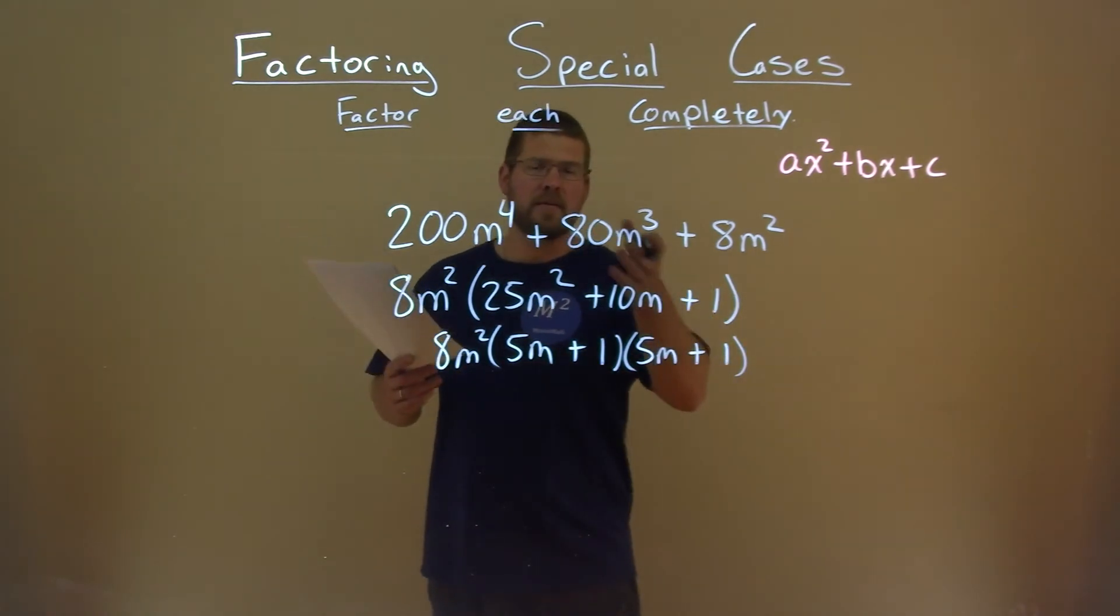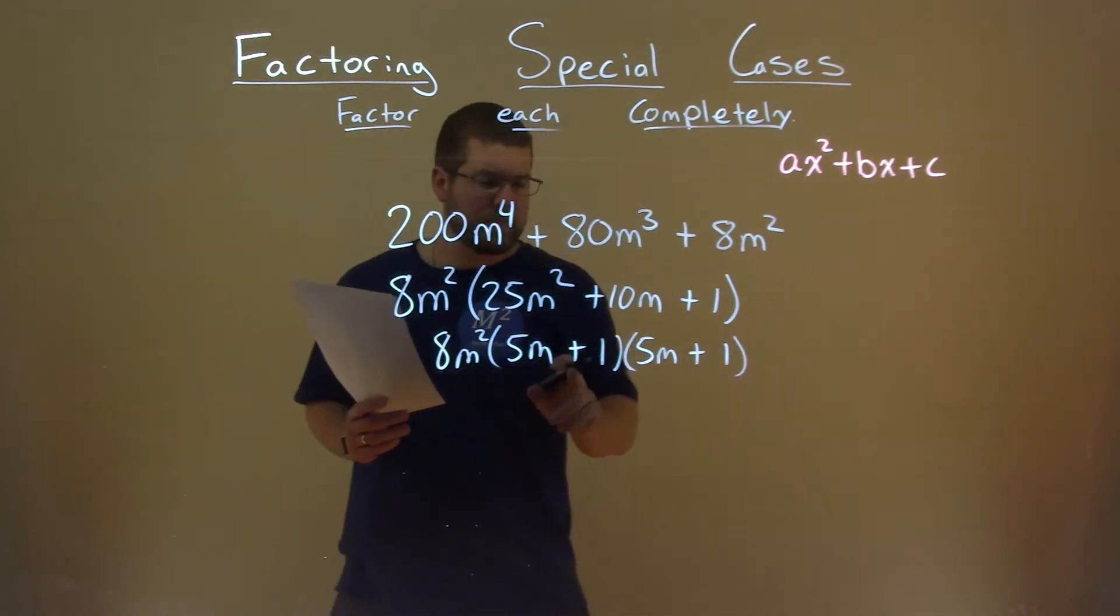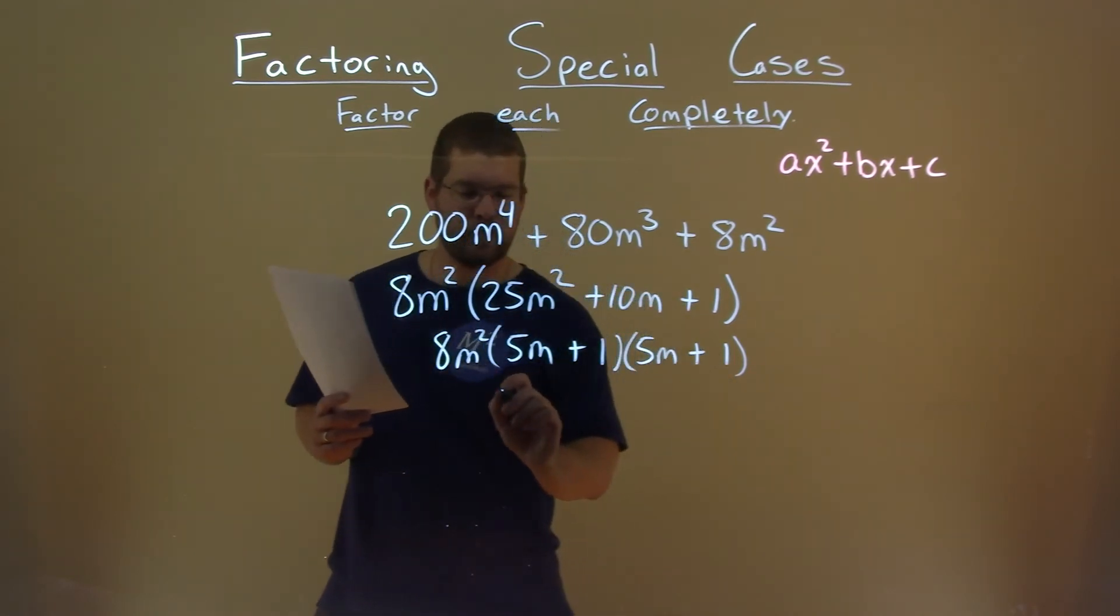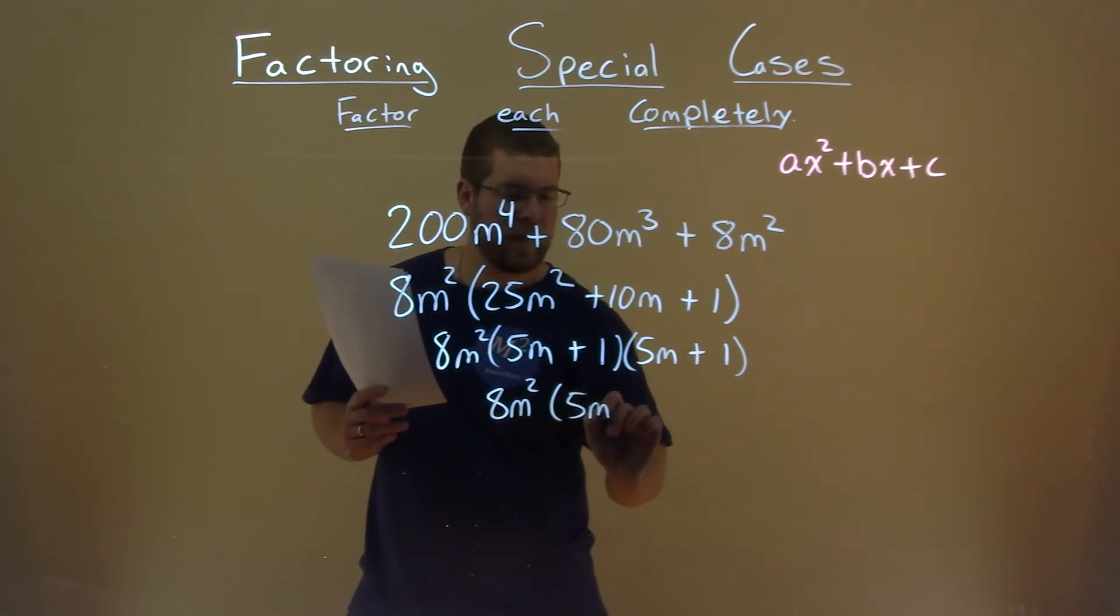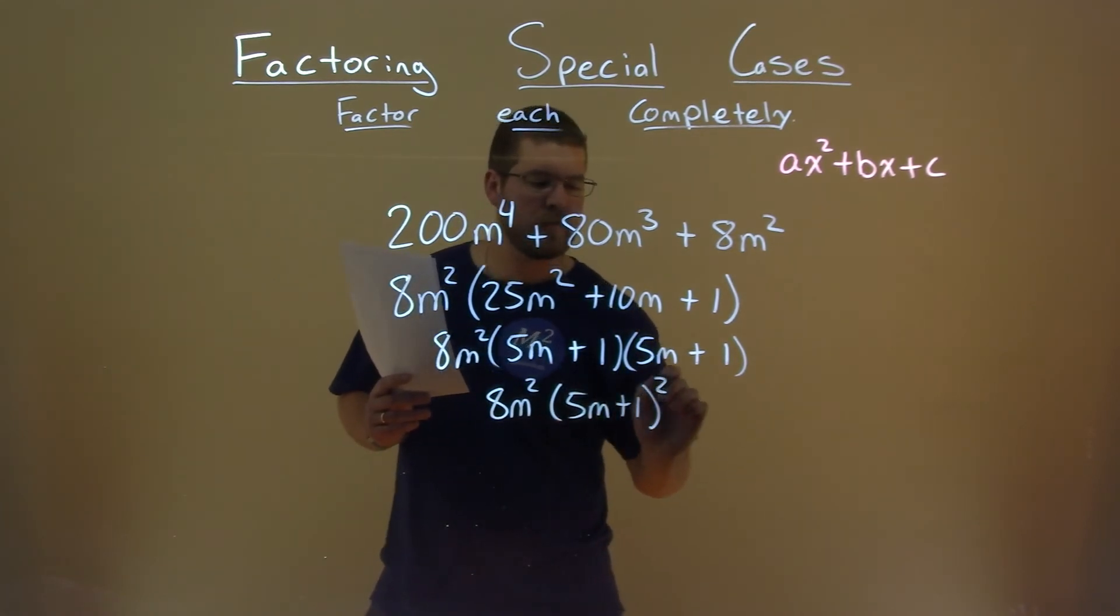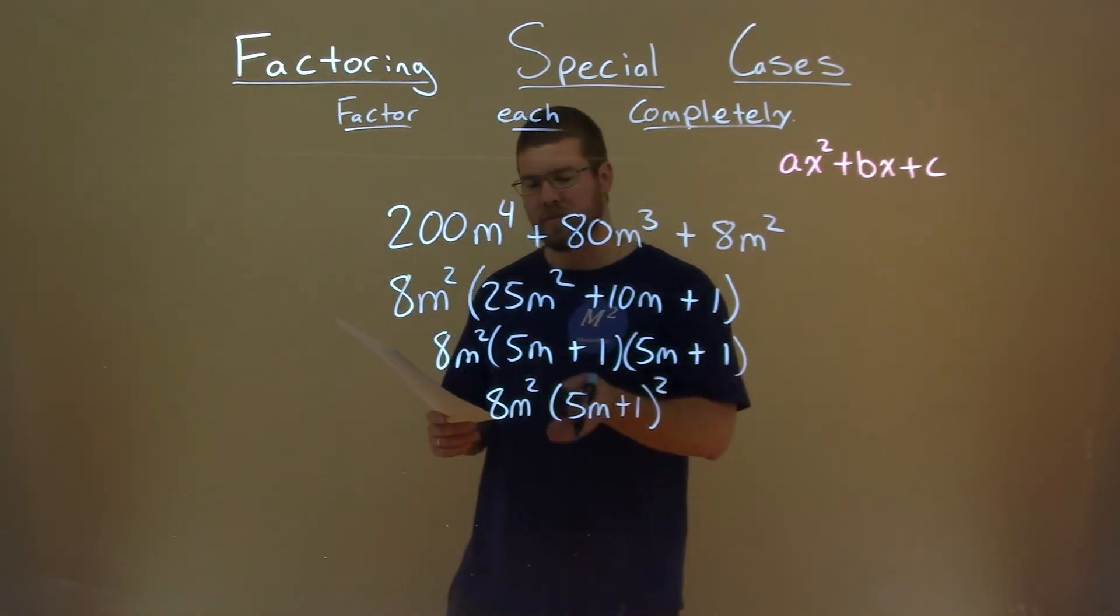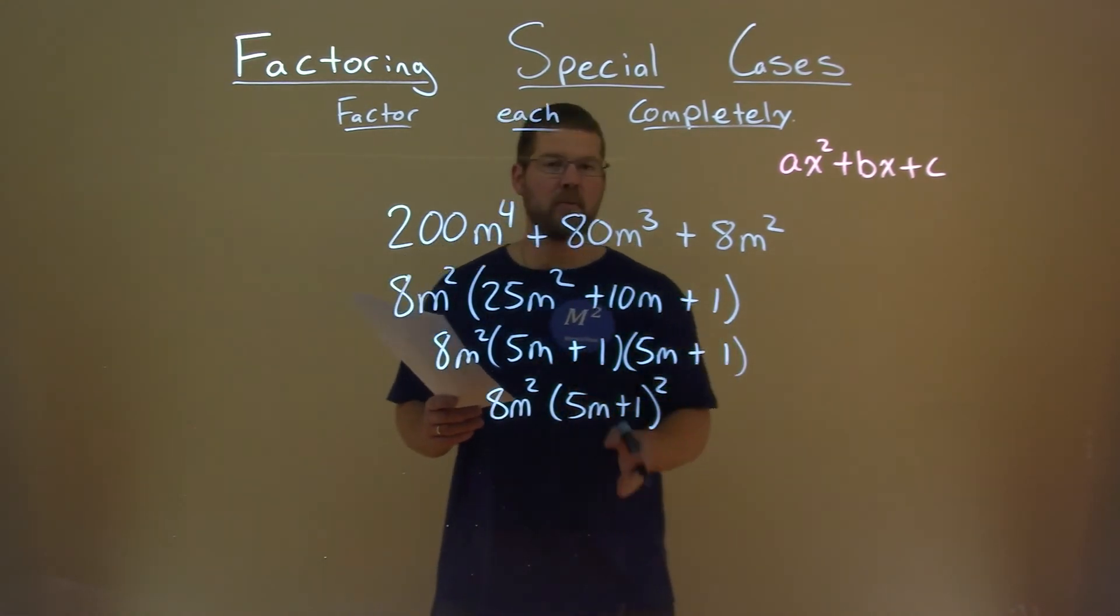So we're done? No. What do we have to do? Notice I have 5m plus 1 times 5m plus 1. The same thing written twice. So I bring down the 8m squared, but I can write this as 5m plus 1 all squared then. So now we have our final answer: 8m squared times 5m plus 1 squared.